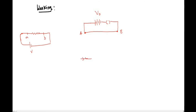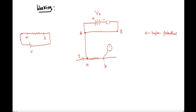To find the potential between points A and B, I connect point A of the circuit to point A of the potentiometer with a wire of negligible resistance. Point A is at higher potential. Then I connect point B through a galvanometer and a jockey to the sliding wire of the potentiometer. I am looking for a point on the wire at which I get no deflection in the galvanometer.